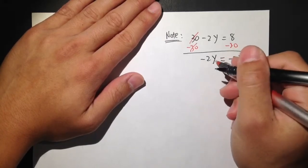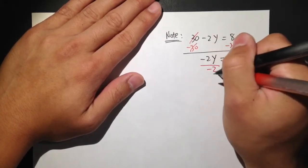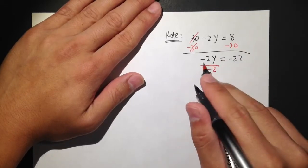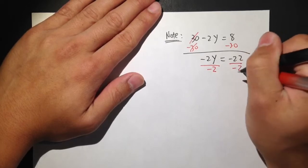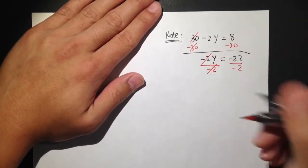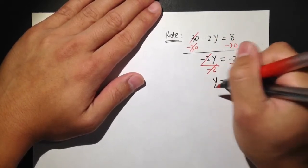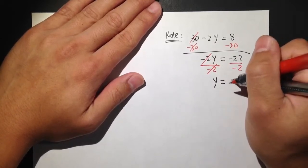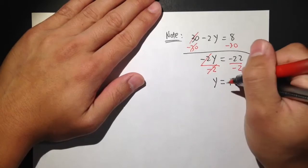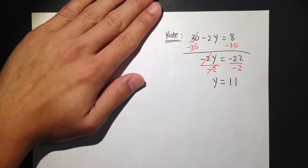Negative 2y, and we are going to divide by the negative 2, because that's like negative 2 times y. Divide by negative 2 on both sides. It cancels. And we get y is equal to negative 22 over negative 2, which is positive 11. That's how you solve for y.